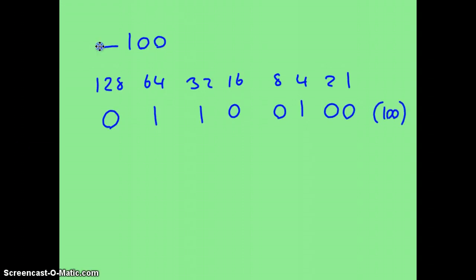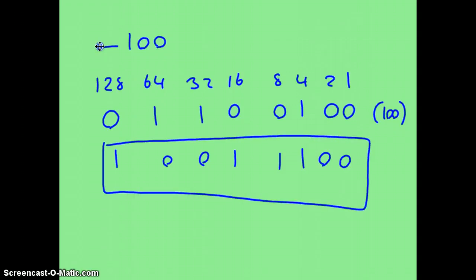Now that's not the answer, because we want minus 100. So what we do, we apply 2's complement. Up to and including the first 1, we leave as is. All the 0's become 1's, and all the 1's become 0's. And so our final answer, this number here, equals minus 100.